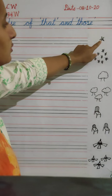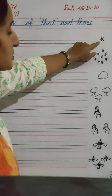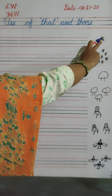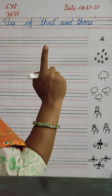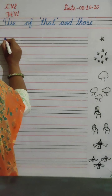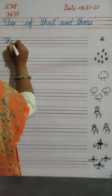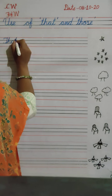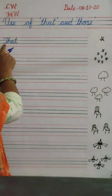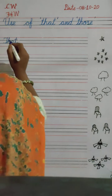Look on the board. What is that? That is a star. There is one star, so we will use 'that' for one thing. How to write? T-H-A-T. That. When we start writing sentences, the first letter we will write capital — 'That'. That is a star.